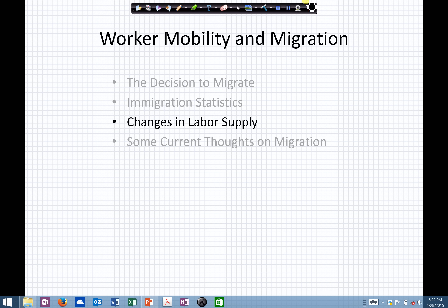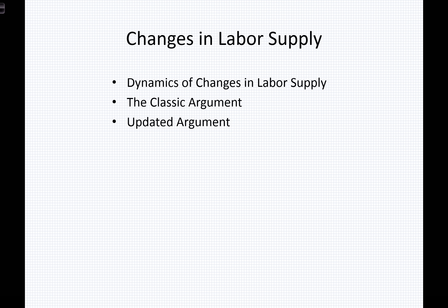In this segment on worker mobility and migration, I'd like to talk about changes in labor supply. I'd like to review the dynamics of changes in labor supply and look at what we consider the classic argument in terms of immigration and its effect on wages and labor. I'd like to update that argument and see if we can consider some ways in which that argument is more or less powerful than we might suppose. We call that the updated argument.